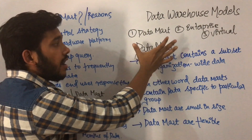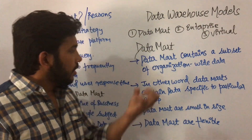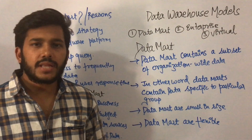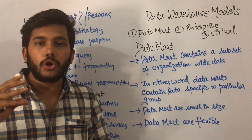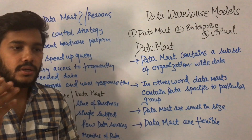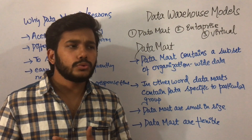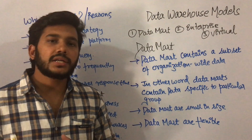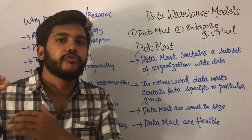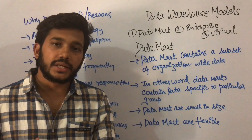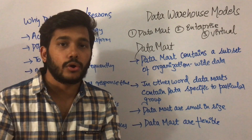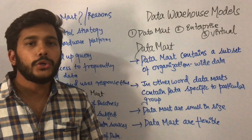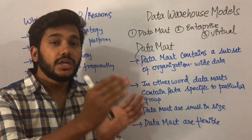In this video we are going to discuss about data mart. Data mart contains a subset of organizational-wide data. It is like a part of a subject stored in the data mart. Suppose you want to store data for a college in your data warehouse - the data mart can be a collection of data of physics subject, computer science subject, or electronics subject. So data mart is a subset of organizational data, or you can say data mart is a part of data warehouse.